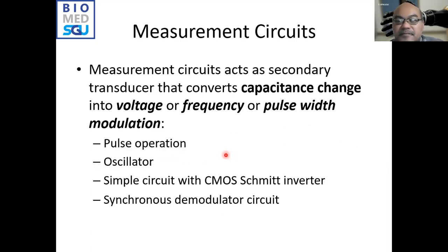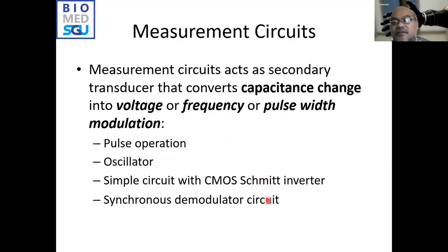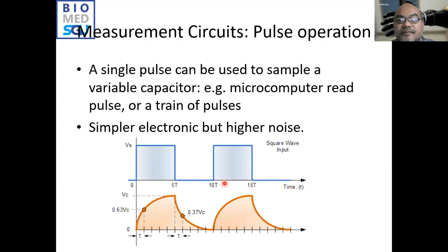The measurement circuit acts as a secondary transducer that converts capacitance change into voltage, frequency, or pulse width modulation. Circuit options include pulse operation, an oscillator, a simple circuit with CMOS switch inverter, or a synchronous demodulator circuit. With a single pulse input, a microcomputer can read the pulse or a train of pulses. However, this simple approach usually has higher noise — when a square wave is input into the capacitance sensor, there will be a response time.